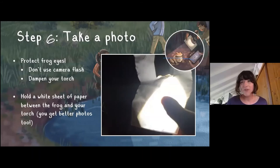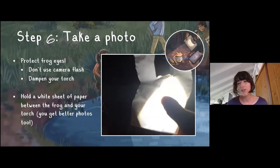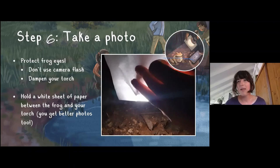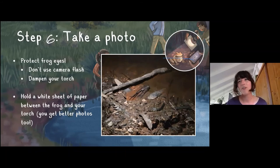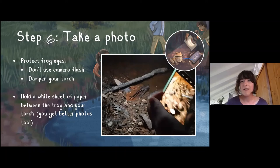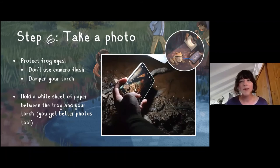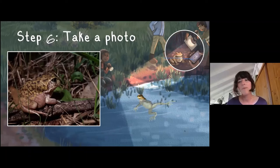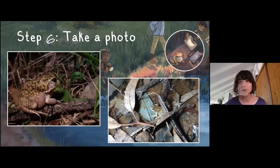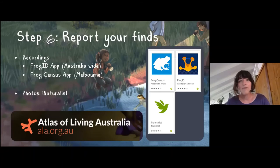Once you've found your frog, you want to get a picture to upload to iNaturalist. A tip for photographing frogs at night: turn off your camera's flash and dampen your torch using the white sheet of paper — fold the paper over your flashlight to make the light much more dim and diffuse. The frog stays calm, you can sneak in really slowly to get your picture, and you get a nicer photo with better color because of the more diffuse light.